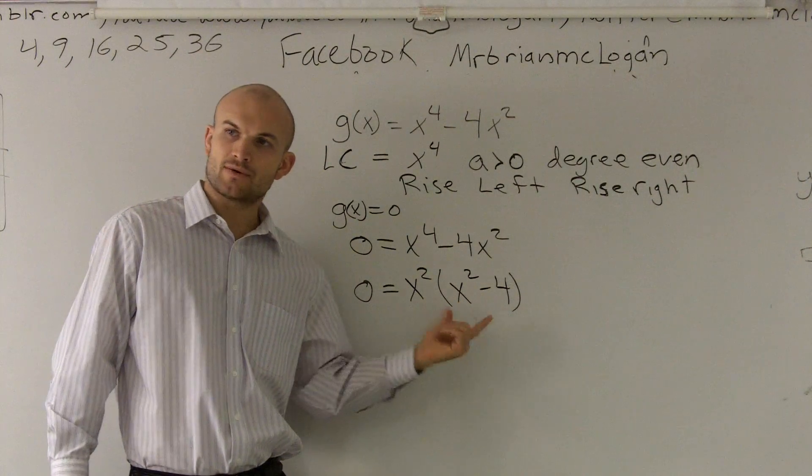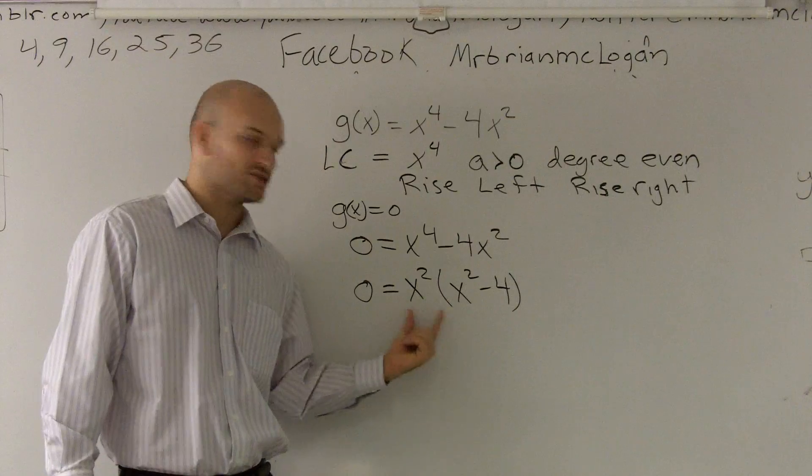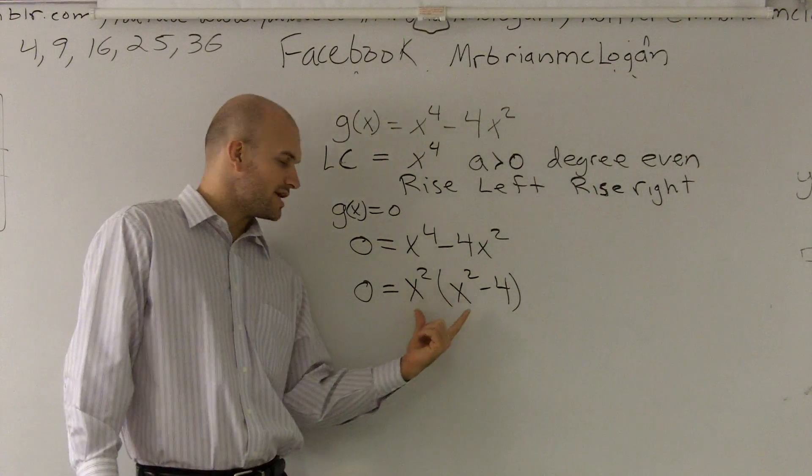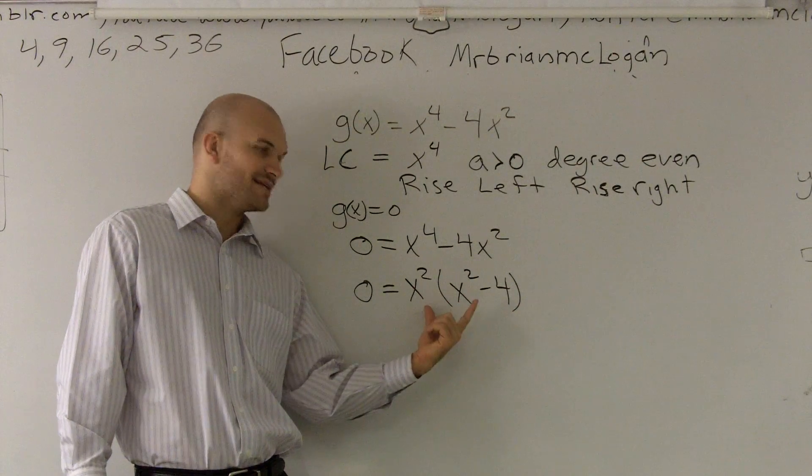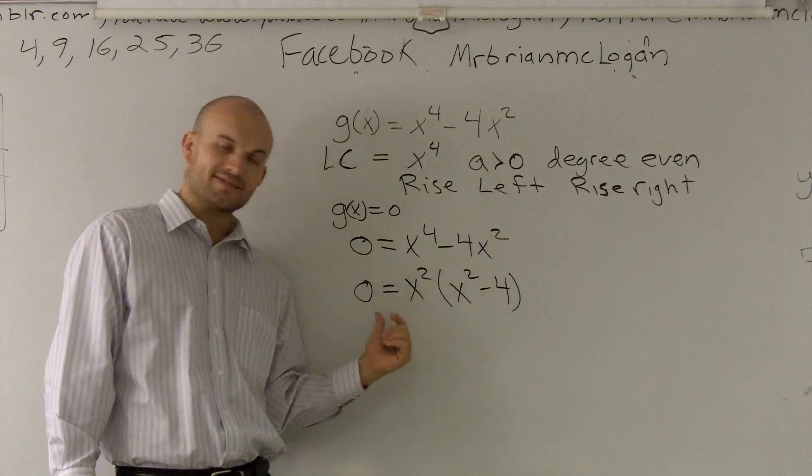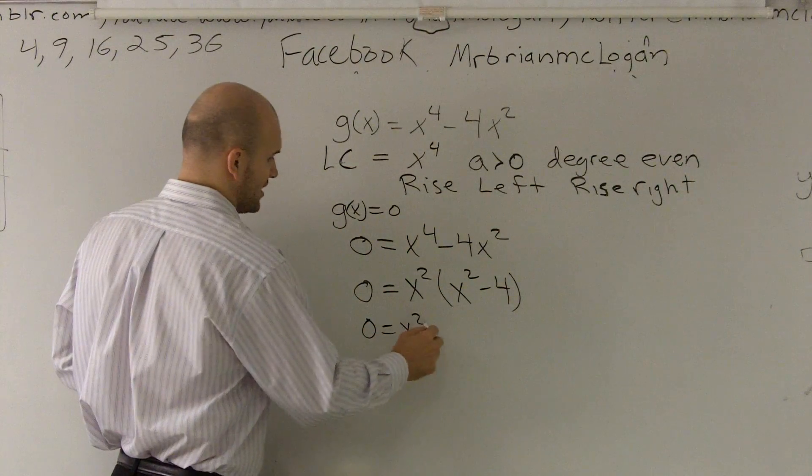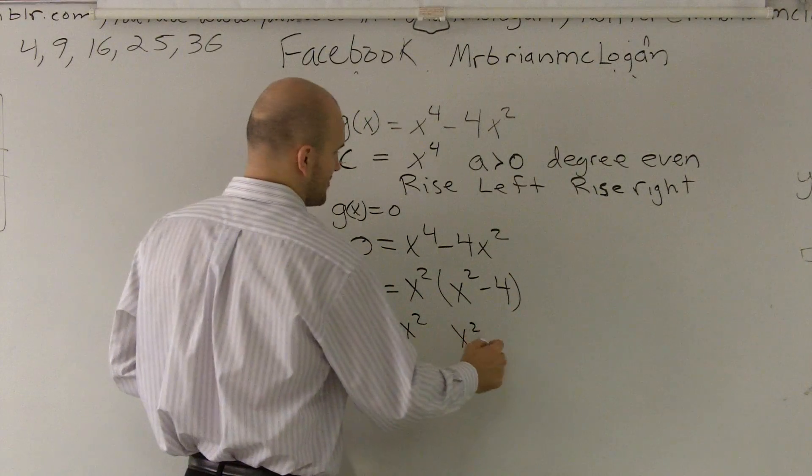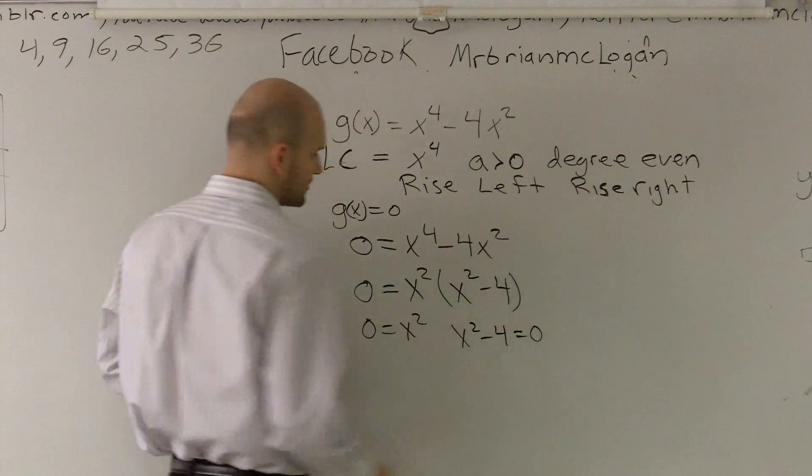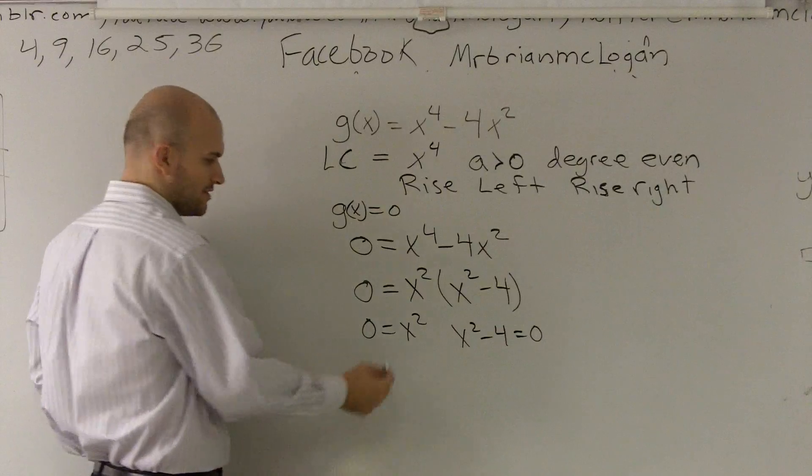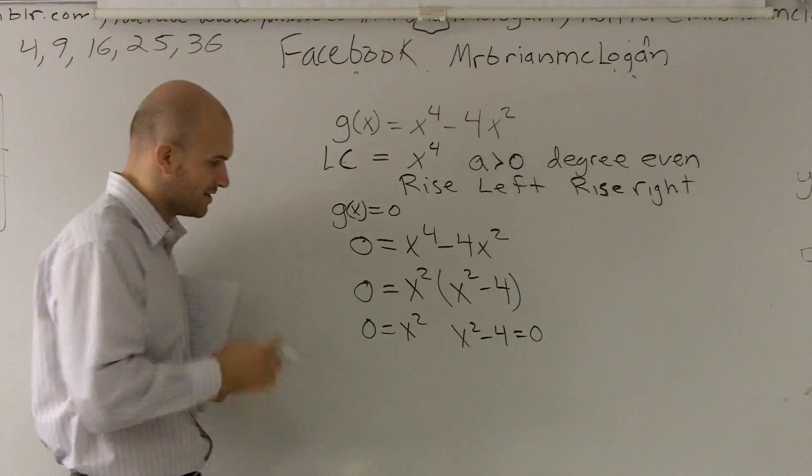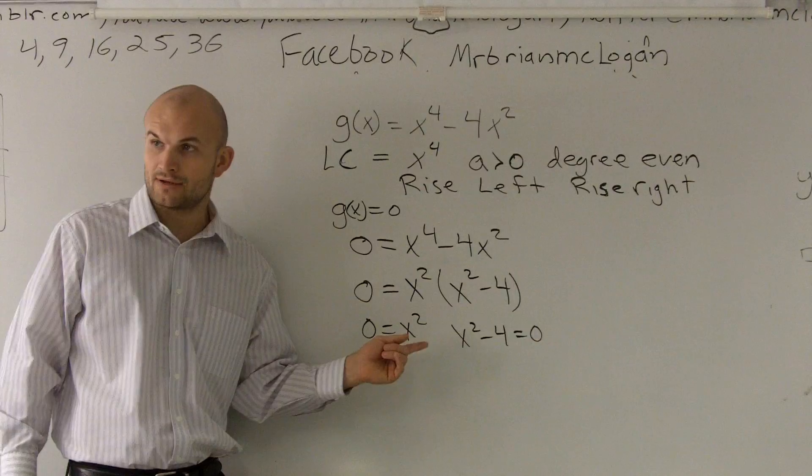I can't factor this any further. So what I'm going to do is write this as a set of linear factors. Since these both multiplied gives us zeros, I can say that 0 equals x squared, and x squared minus 4 equals 0. Solving now for 0. And one thing just to notice, you guys notice my linear factor is squared, right?